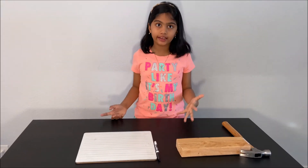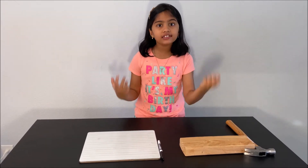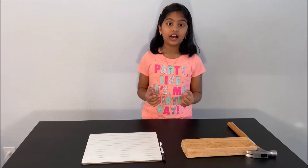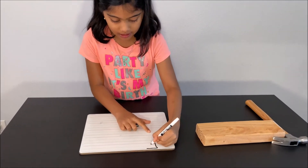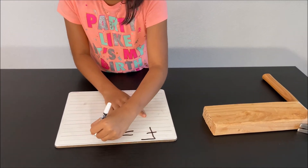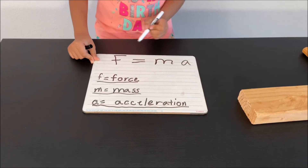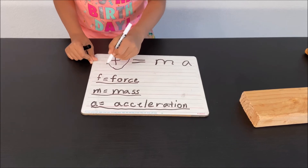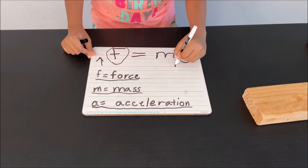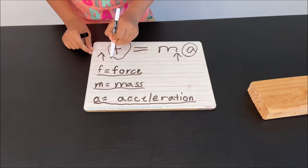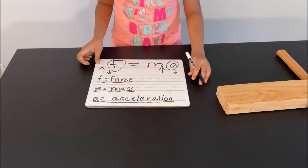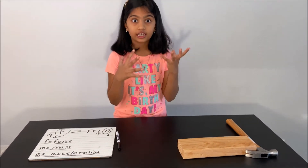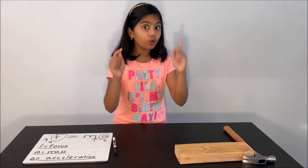Hello everyone! Today we are going to do an experiment about Newton's second law. Newton's second law states that the acceleration is proportional to the force. There is also an equation: F equals MA. If the force is high, that means the acceleration is also high; if the force is low, that means the acceleration is also low. Now let's do our experiment — make sure there is an adult next to you for your safety.